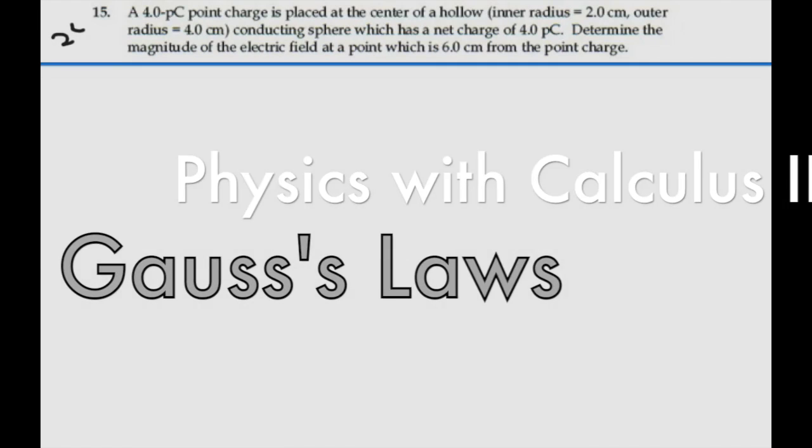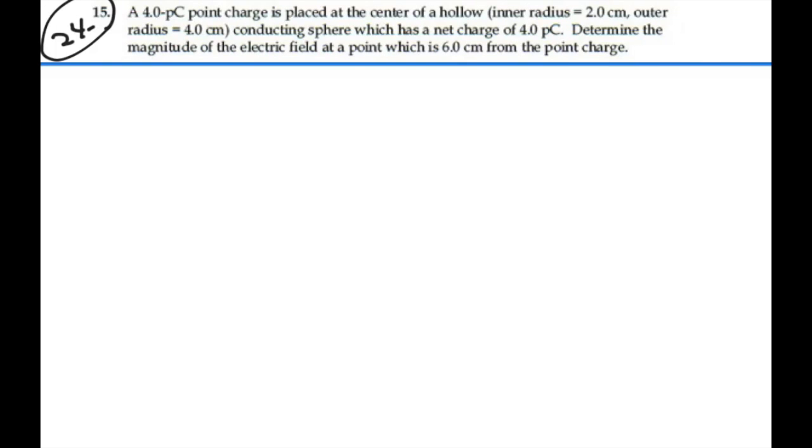Here's problem 2415. A 4 picocoulomb point charge is placed at the center of a hollow, inner radius 2 centimeters, outer radius 4 centimeters, conducting sphere which has a net charge of 4 picocoulombs. Determine the magnitude of the electric field at a point which is 6 centimeters from the point charge.